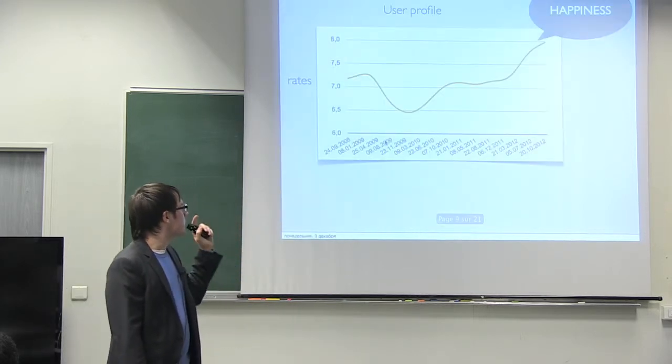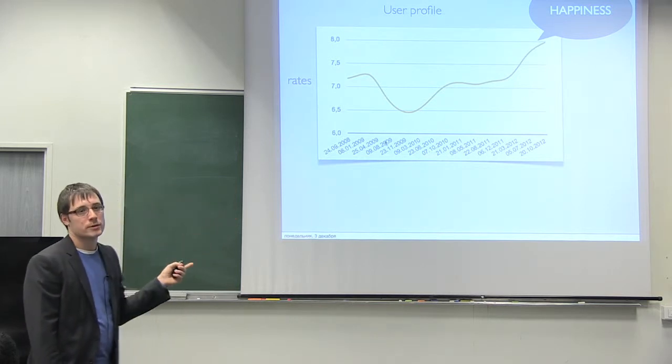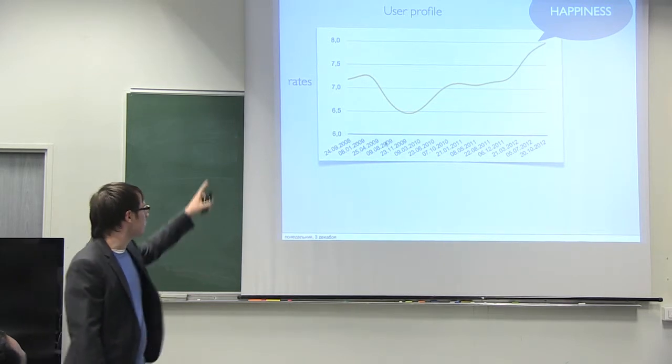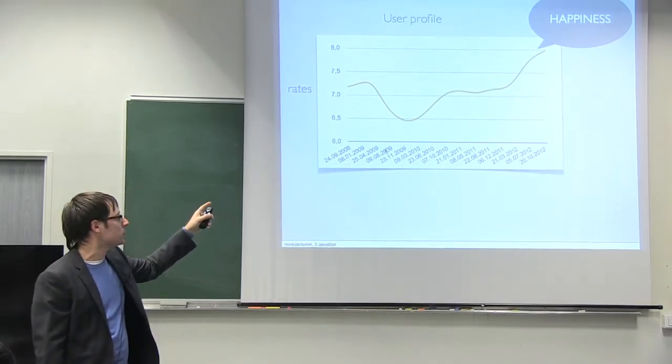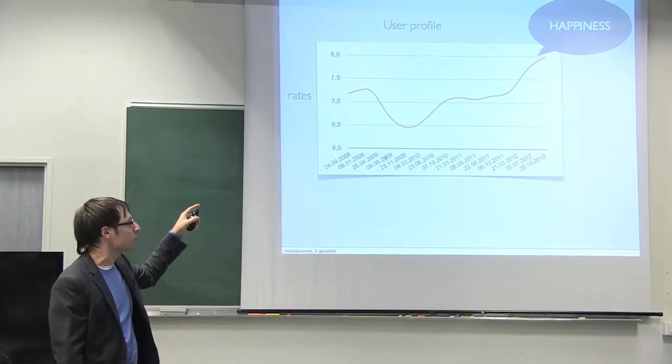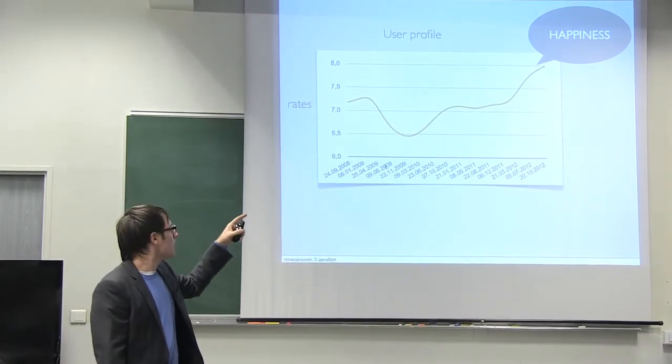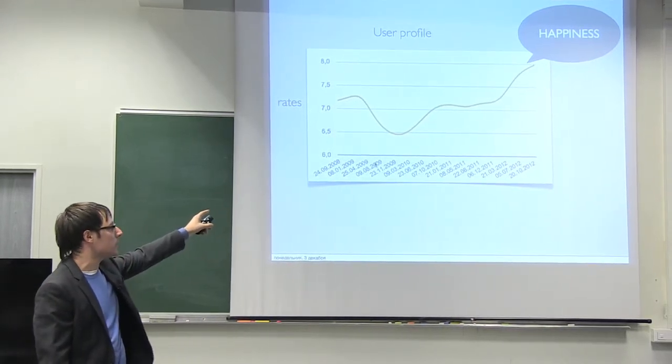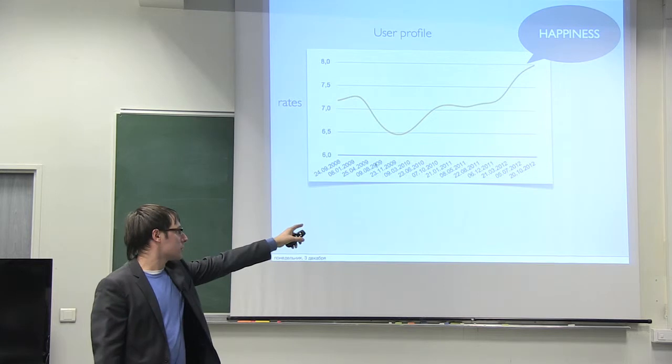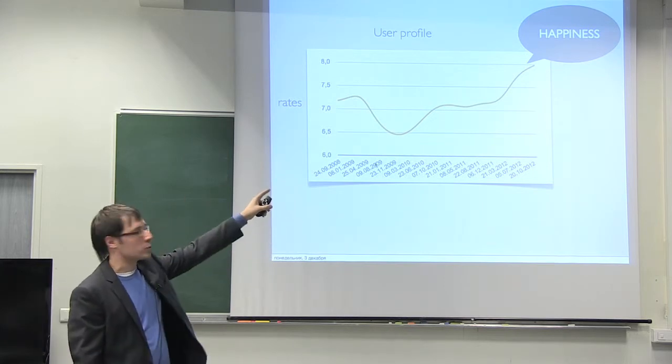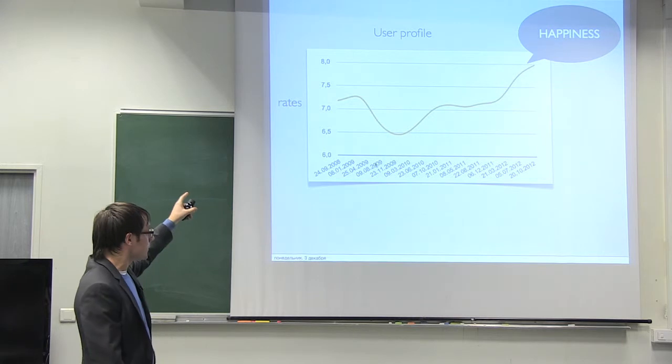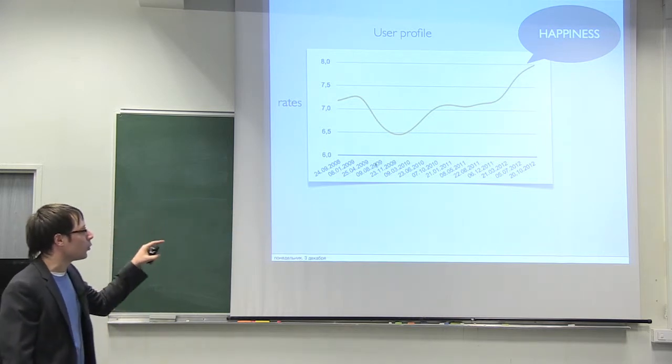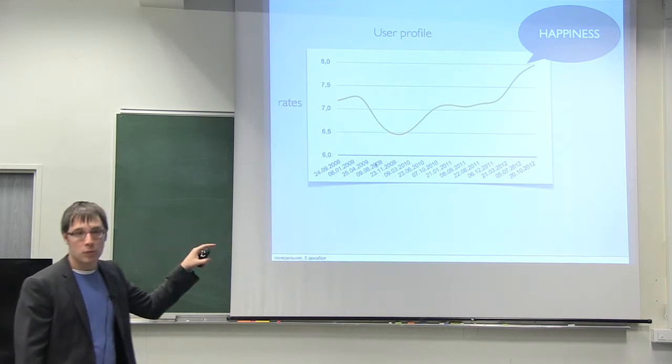It's actually my user profile. Here you can see the average rates which users put to movies they've seen over a long period of time. I started using the service in 2008, and currently it's 2012. That's what we call happiness. This is the dynamics of average rates, and this is what we want for every user in our service.